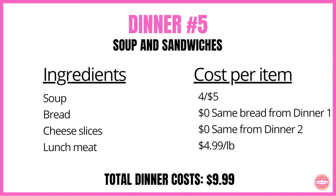Our last meal is soup and sandwiches — simple but a good filling meal. The soup was on sale four for $5. The bread costs you nothing because you have bread left from dinner one or buns from dinner two. Same with cheese slices — no additional cost since you have them from dinner two. You'll need some lunch meat, on sale for $4.99 a pound. Dinner number five comes out to $9.99. As you can see, just from this one sales ad, we've created five different dinners all under $11 for four servings — most actually under $10.